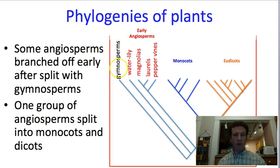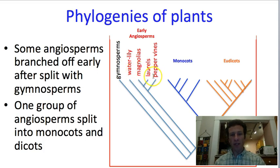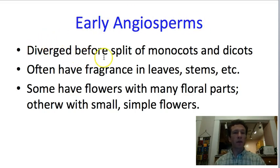Within the angiosperms, there are two really big groups: the monocots and the eudicots — monocots in blue, eudicots in orange. But they're not the only angiosperms; there are lineages that split off beforehand, and I'm just showing you a couple of examples here. We're going to start talking about the early angiosperms, beginning with the one that branches off first — the waterlily. Before we talk about it specifically, let's discuss some general characteristics of these plants, which all diverged before the split of monocots and dicots.